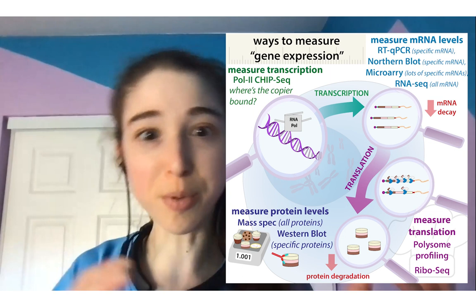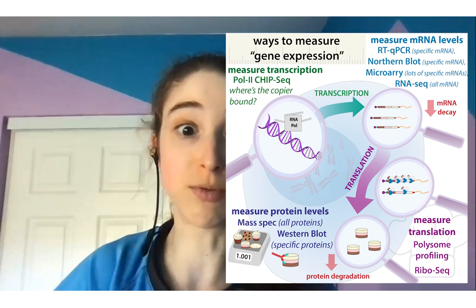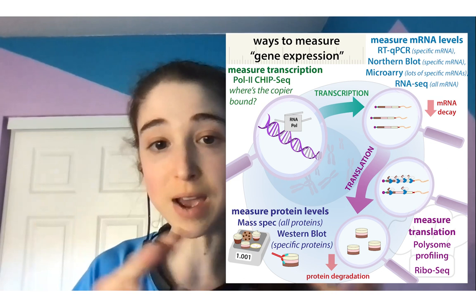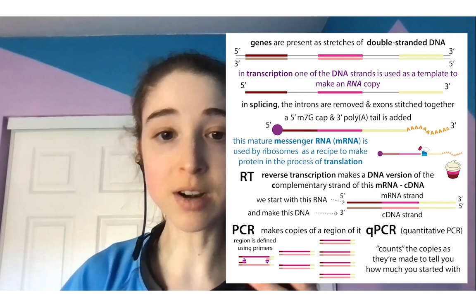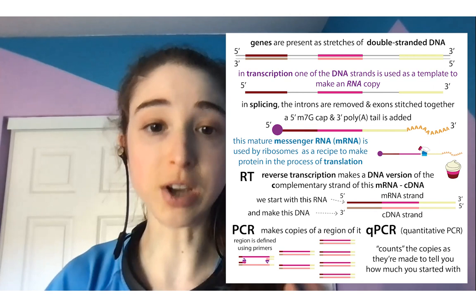Imagine 'It's a Small World' is so popular that they have to put more copies of the ride in the park, because even with as many boats as possible on that one ride, it still isn't enough. We've talked about how we can use RT-qPCR — reverse transcription qPCR — to count how many messenger RNAs there are for a given protein, meaning how many copies of the recipe are out there for the ribosomes to use.